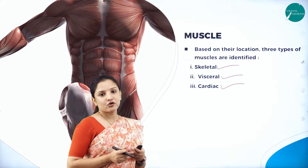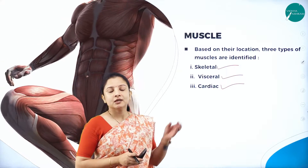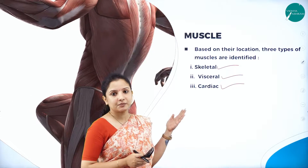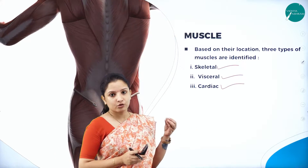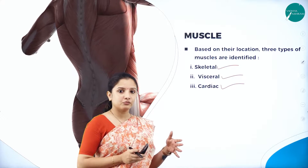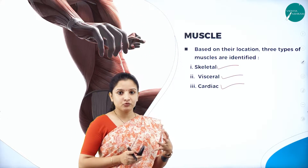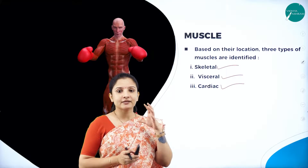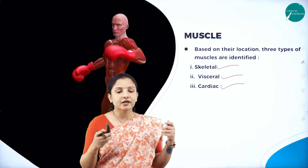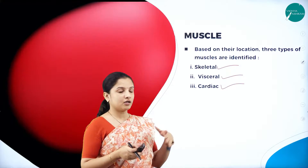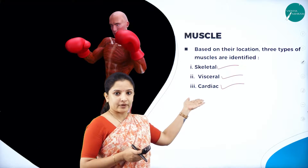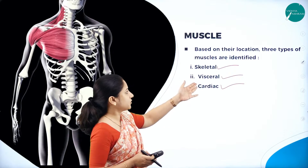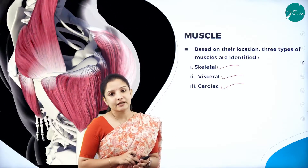Based on location, muscles are identified into three types: skeletal muscles, visceral or smooth muscles, and cardiac muscles present in the heart. It is important to understand all three because not just skeletal muscles but cardiac muscles also exhibit movement — when the heart beats, contraction and relaxation of the heart occurs, which involves stretching and relaxing of the muscles. That is also a kind of movement, which is why muscles are divided based on location into skeletal, visceral, and cardiac.